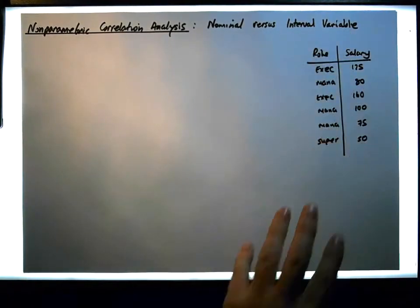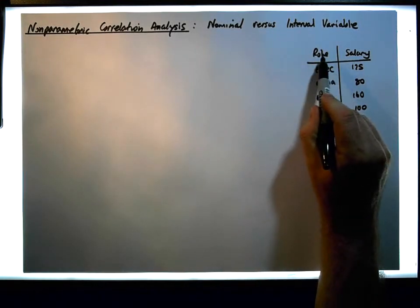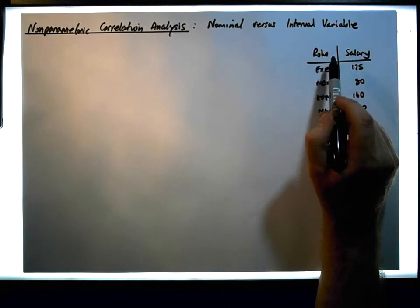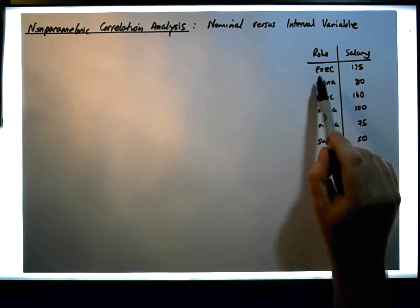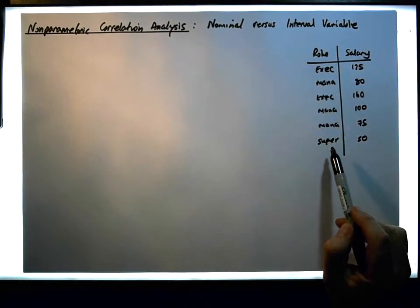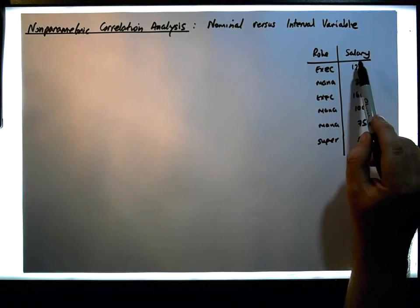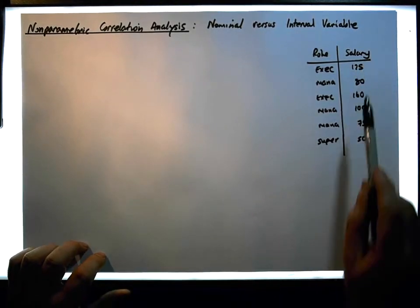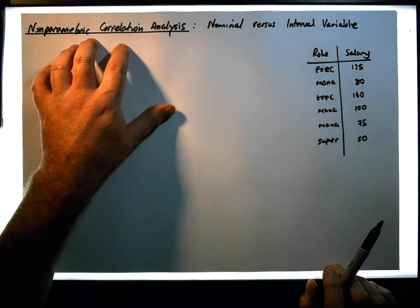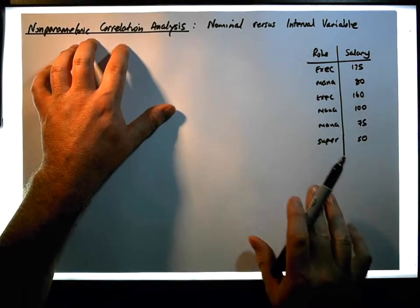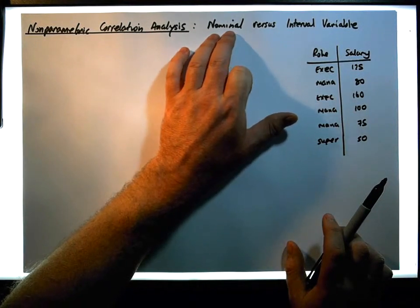All I'm trying to show you here is that what we have is a nominal variable, and in this case it has three levels of measurement: we have either executives, managers, or supervisors. And we have a continuous variable, which is salary, measured on an interval or ratio scale. What we're going to do in this particular video is place a restriction on the type of nominal variable.